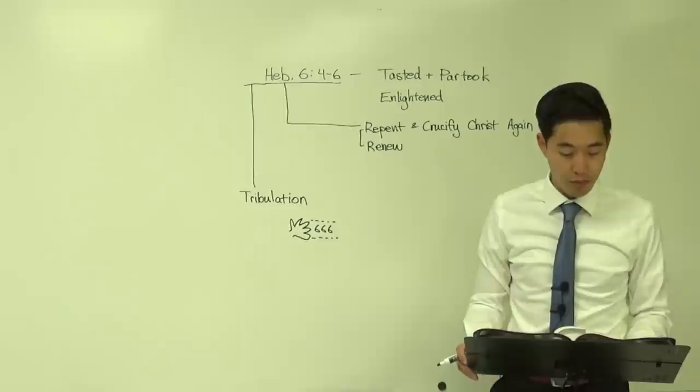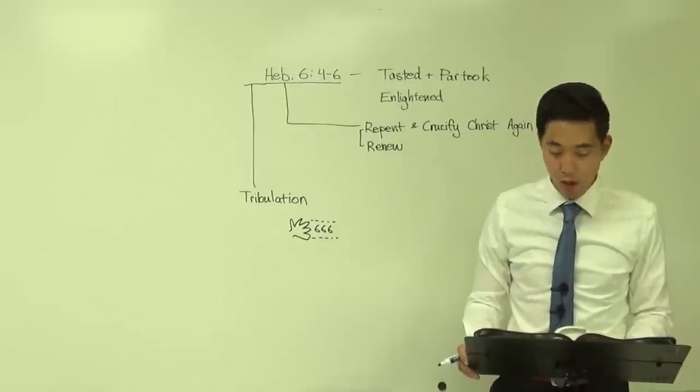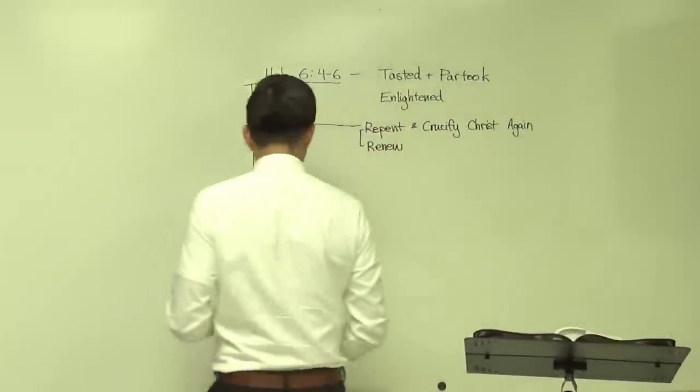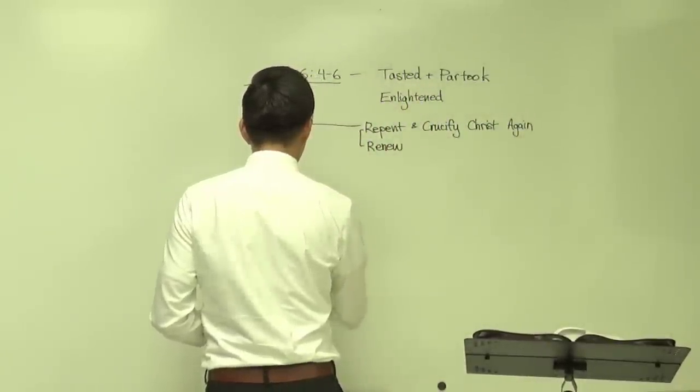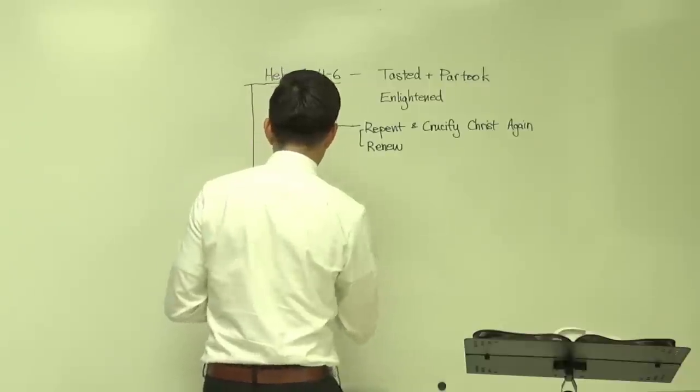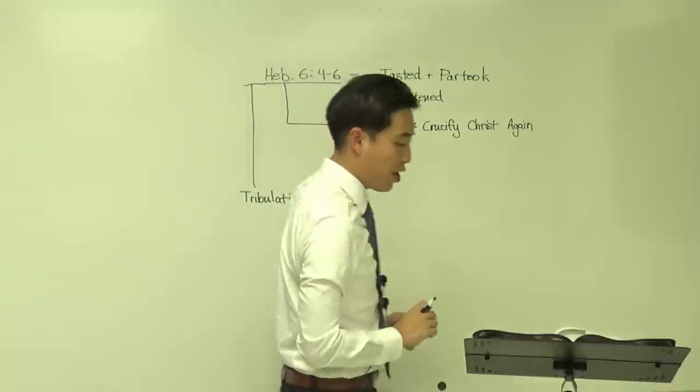Hebrews chapter 2. And then we'll read verse 5. Hebrews chapter 2, verse 5. Now, this becomes even more plain over here. It becomes even more plain over here that the application is going to be a tribulation timeline. Notice the last part reads over there.